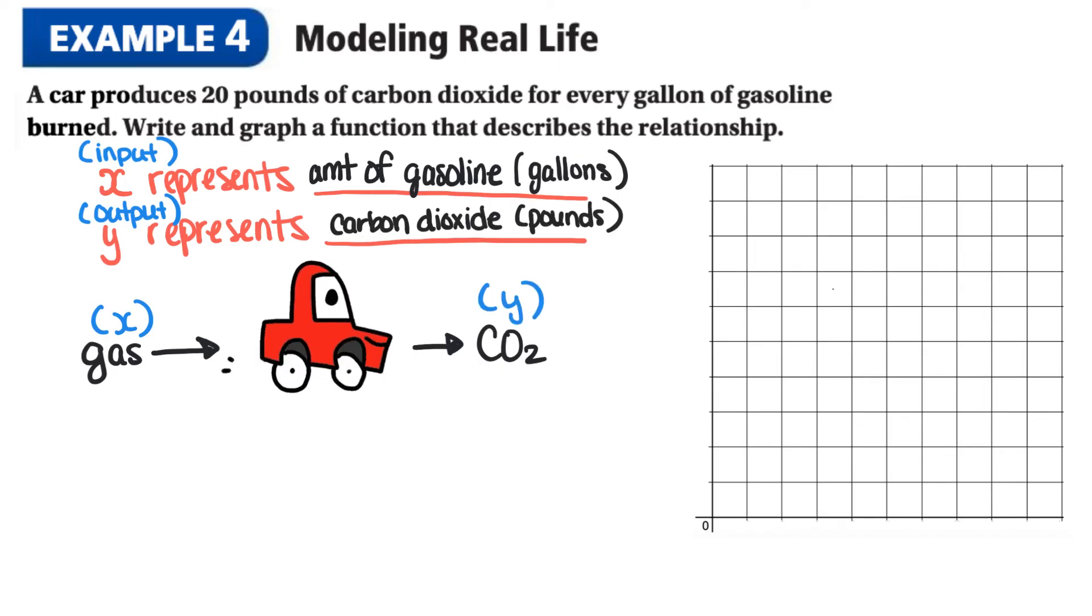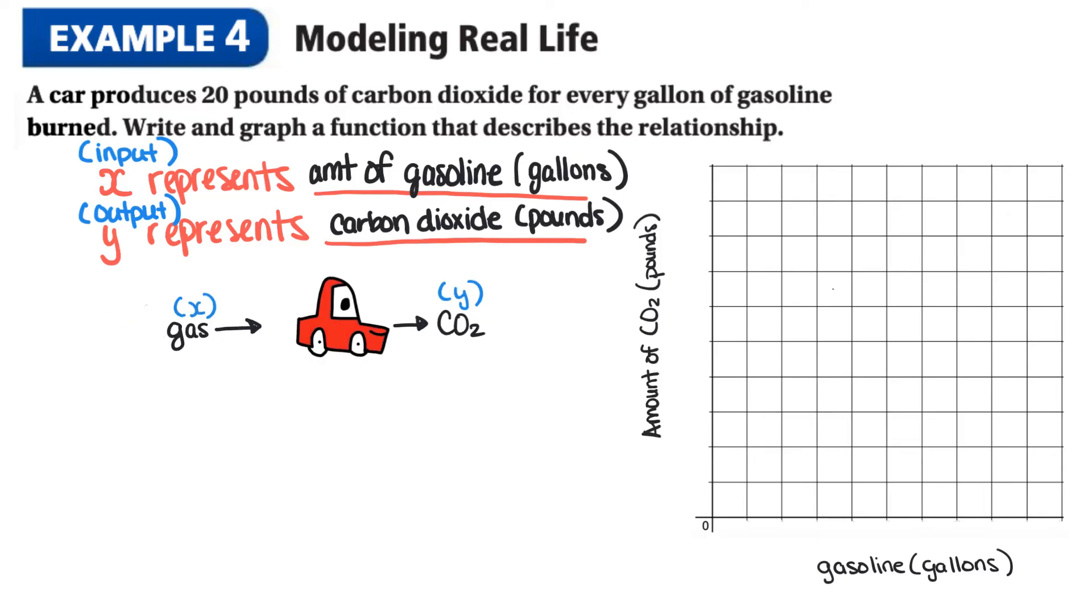When we label our graph remember the independent variable is on the X-axis. So here we can label gasoline and then in brackets we can put our units so gallons and then the dependent variable goes on the Y-axis and we can label this the amount of CO2. And again in brackets we can use the units which is pounds. And since we're producing 20 pounds of carbon per gallon our function is just going to be Y is equal to 20X.